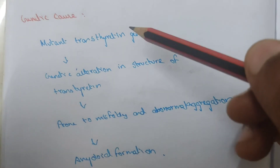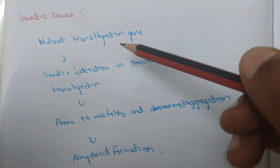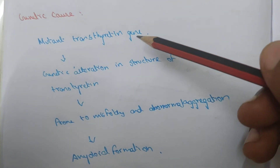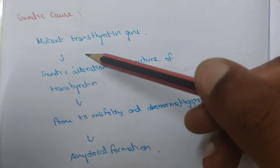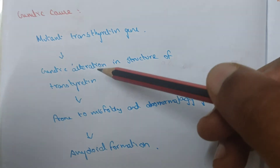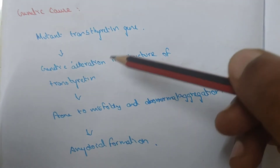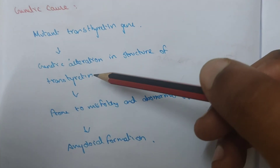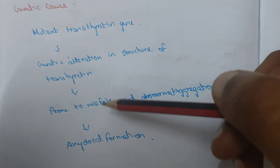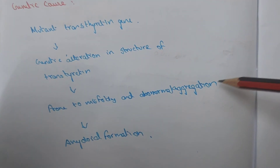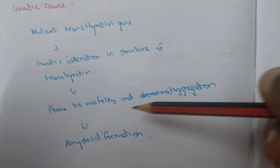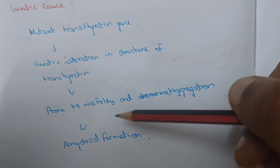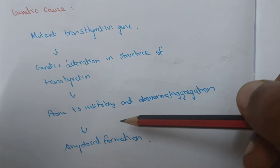The genetic cause involves the mutant transthyretin gene, which genetically alters the structure of transthyretin, making it prone to misfolding and abnormal aggregation, resulting in amyloid formation.